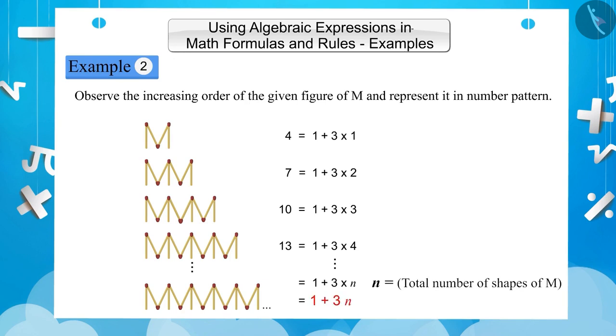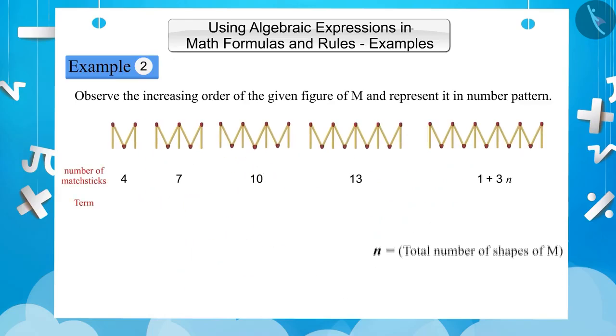With the help of this expression, we can find the total number of matchsticks required to make n shapes of M. The number pattern of this pattern of M shape will be 4, 7, 10, 13, and 1 plus 3n.